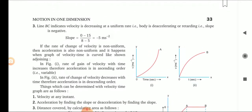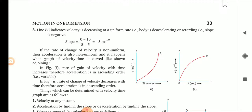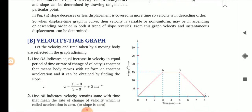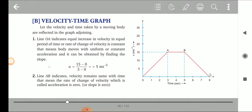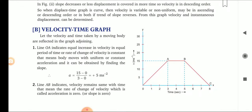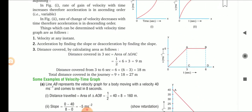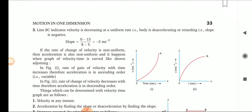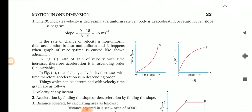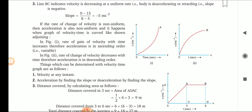Line BC indicates velocity is decreasing at a uniform rate. The body is trying to come to rest — at time 8 seconds it reaches rest position. So line BC indicates velocity is decreasing at a uniform rate; the body is decelerating or retarding here, so the slope will be negative. Slope equals 0 minus 15 upon 8 minus 5, giving minus 5 meters per second squared. So it is negative acceleration, or retardation, or deceleration — these words are the same.